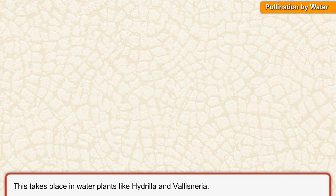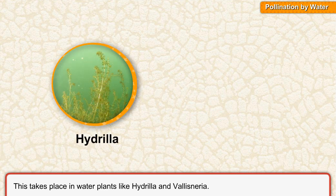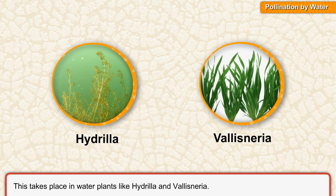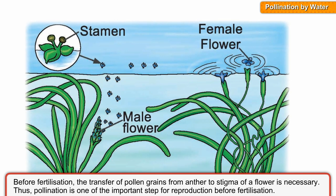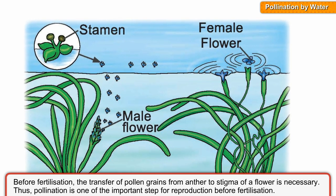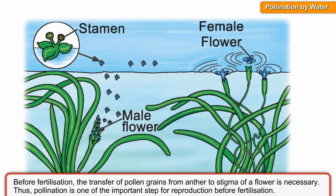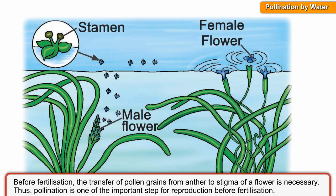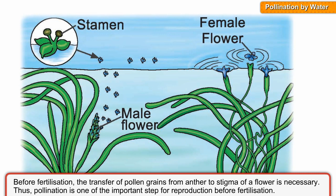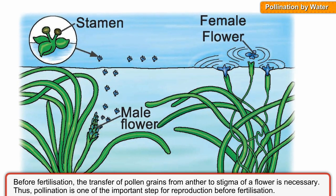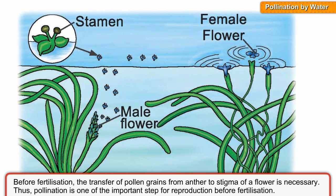Pollination by water takes place in water plants like Hydrilla and Vallisneria. Before fertilization, the transfer of pollen grains from anther to stigma of a flower is necessary. Thus, pollination is one of the important steps for reproduction before fertilization.